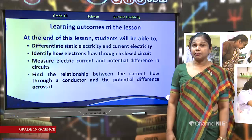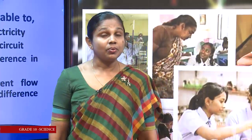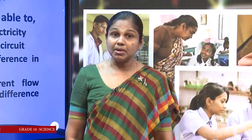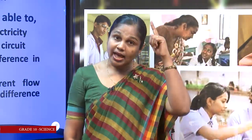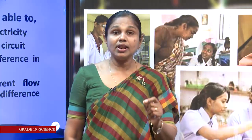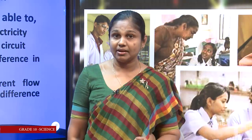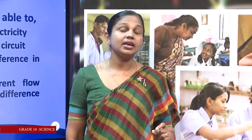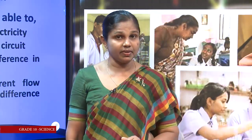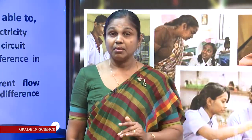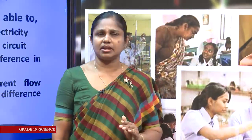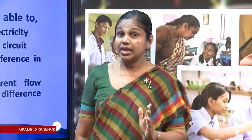Before starting our main topic, I want to remind you of a lesson you learned in Grade 7 about Static Electricity. When you rub your dry hair using a comb or a ballpoint pen, small pieces of paper were attracted to the pen. Why? Because when materials are rubbed against each other, electrons are exchanged among them. Because of that, these objects or materials become charged. These charges collected on these materials are called electrostatic charges.